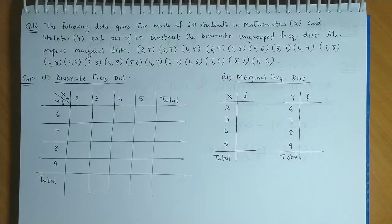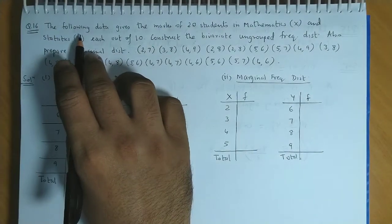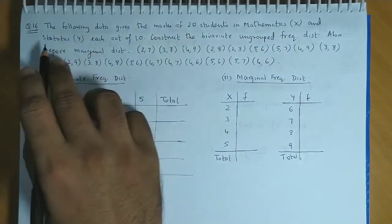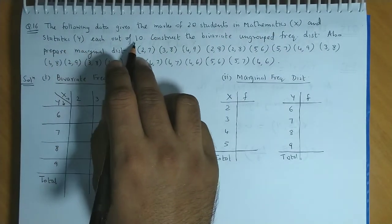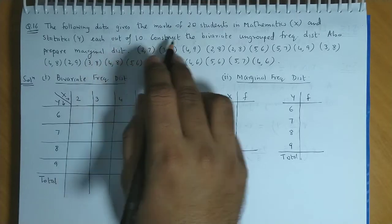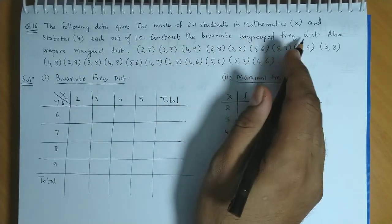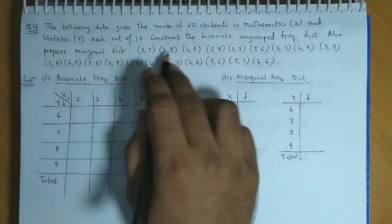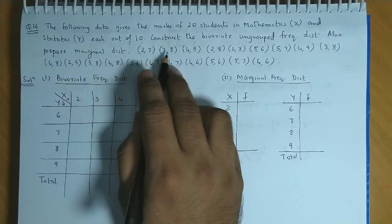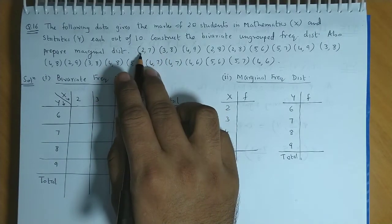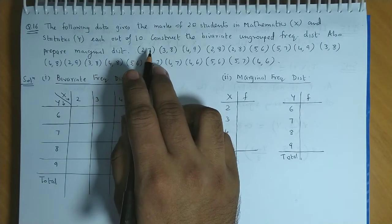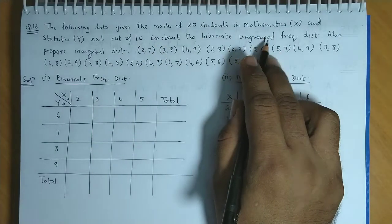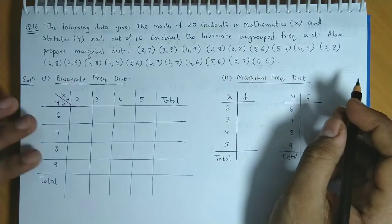Now let's discuss one more question. Here it's given: the following data gives the marks of 20 students in mathematics (x) and statistics (y), each out of 10. You have to construct a bivariate ungrouped frequency distribution. Also prepare the marginal distributions. The marks of students are given in pair-wise form. The first value denotes marks in maths, and second value denotes marks in statistics. We have to prepare the ungrouped frequency distribution for this.